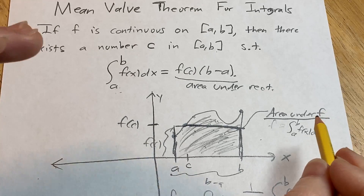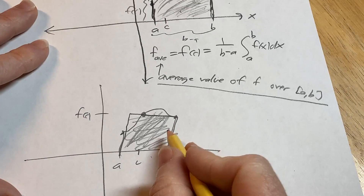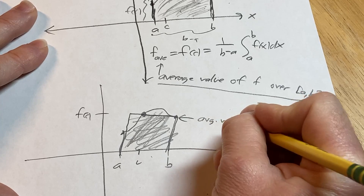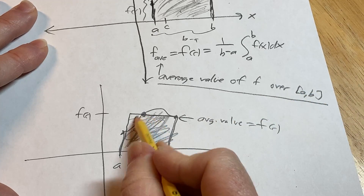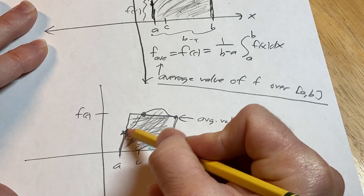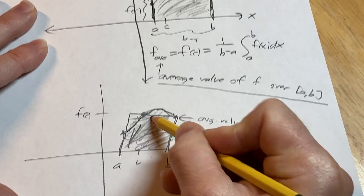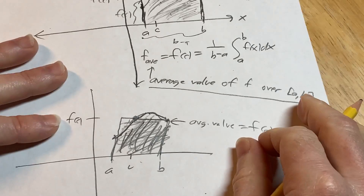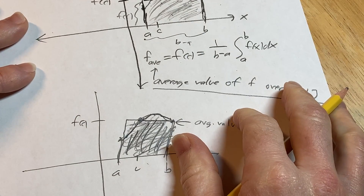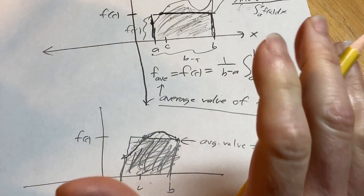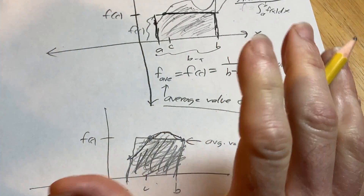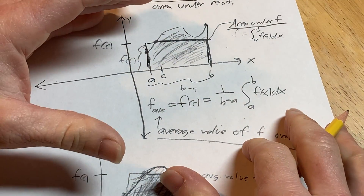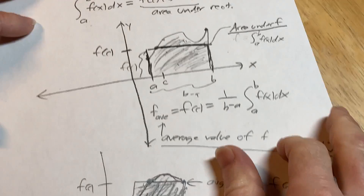The height of that rectangle is called the average value, and it equals f(c). So the area of this rectangle equals the area under the graph of the function. That's a really unique thing in calculus — when people first see it, it's like 'wow, the height of the rectangle equals the area under the graph.' That's really amazing.